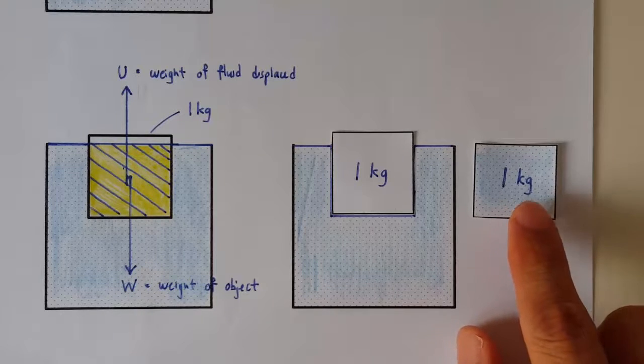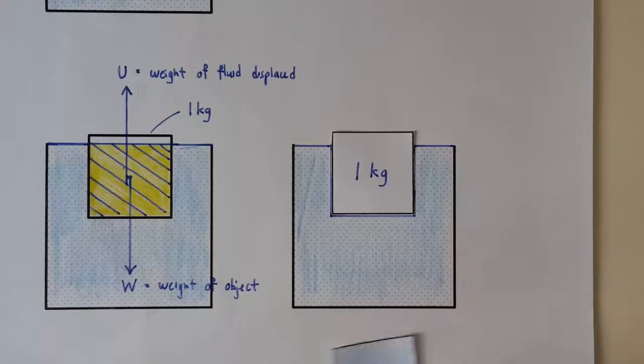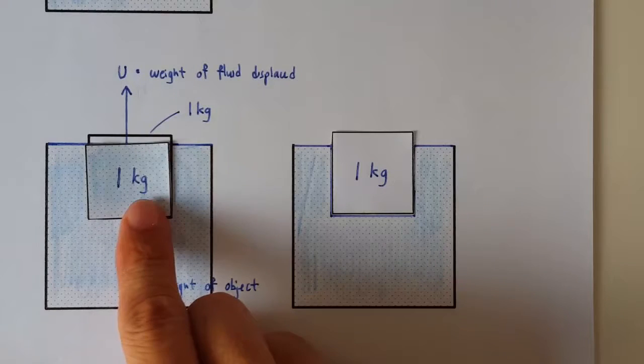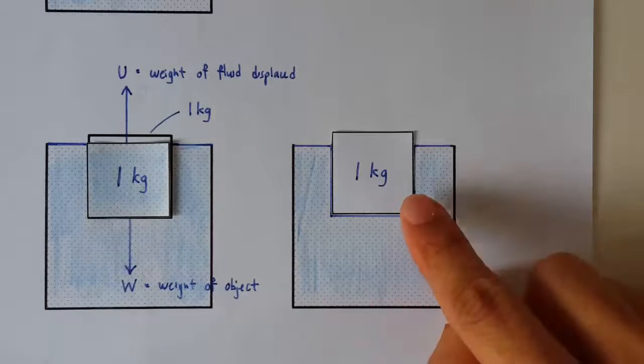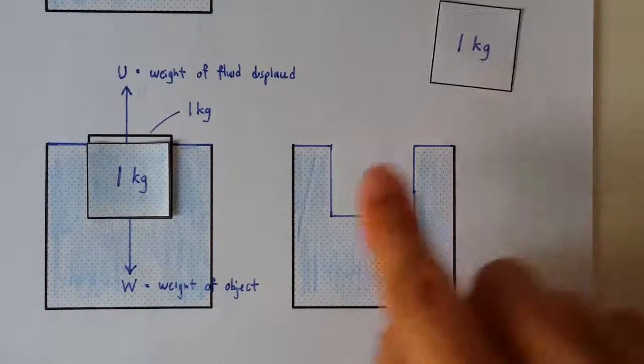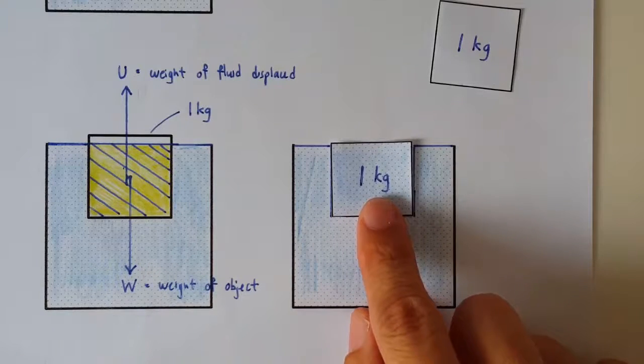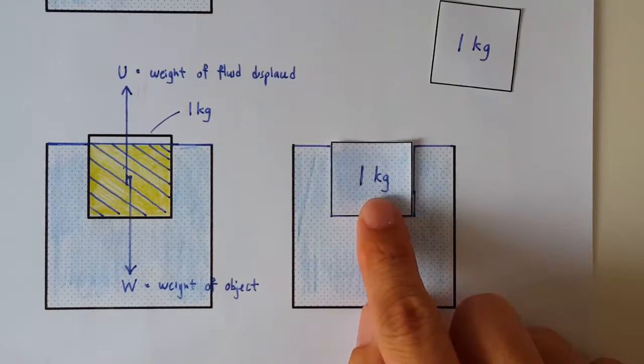Now, how much volume does 1 kilogram of water occupy? It's this volume, isn't it? So after the ice cube has melted, it becomes 1 kilogram of water which occupies exactly this space left behind here.